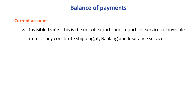The second component is invisible trade — the net of exports and imports of services, i.e., invisible items. These include shipping, IT department services, banking, and insurance services.